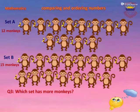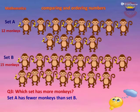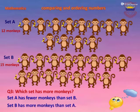Twelve is fewer and fifteen is more. So Set A has fewer monkeys than Set B, and Set B has more monkeys than Set A.